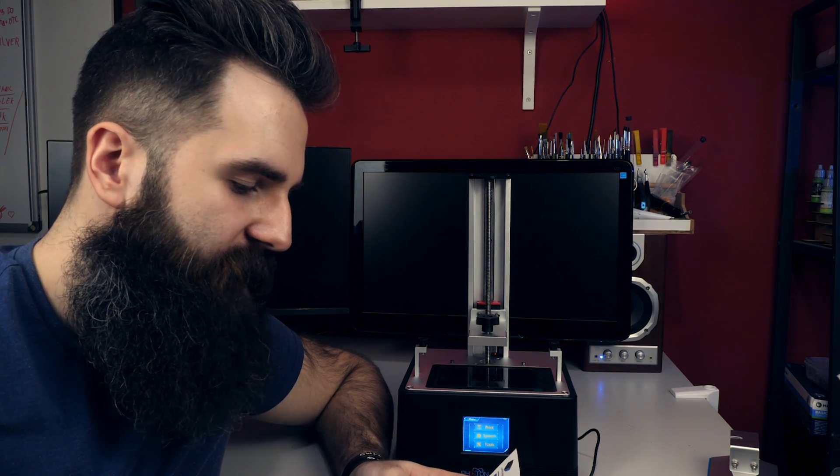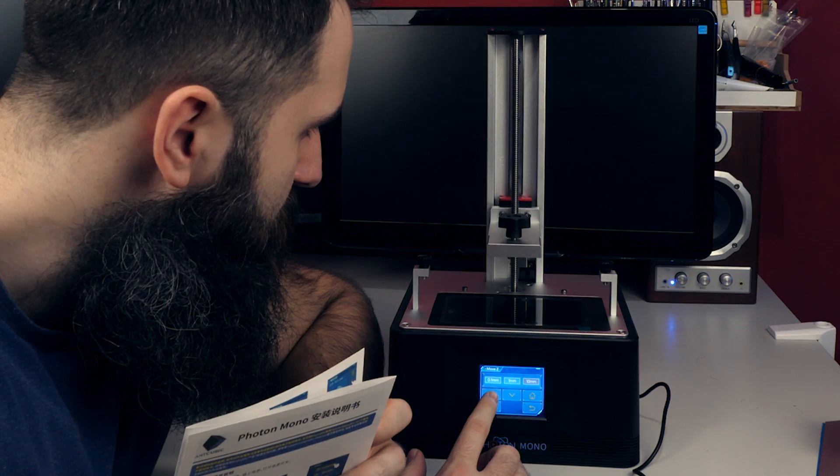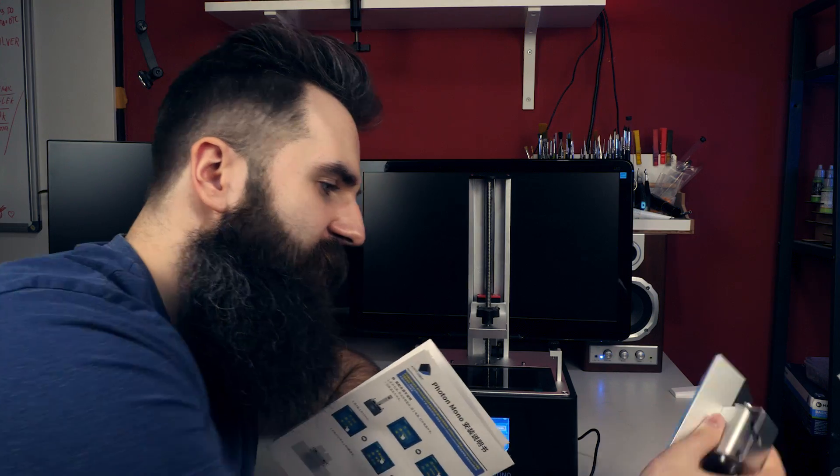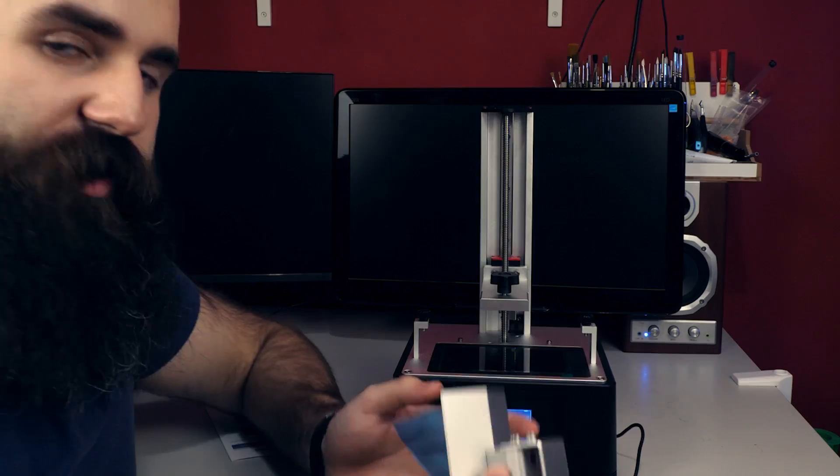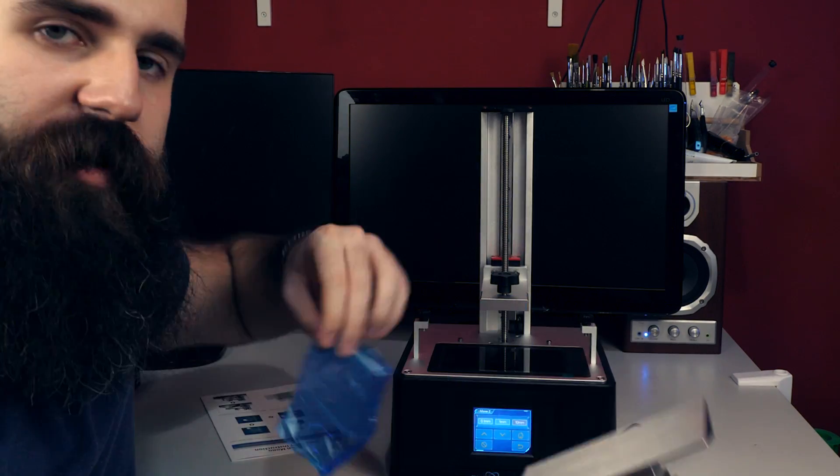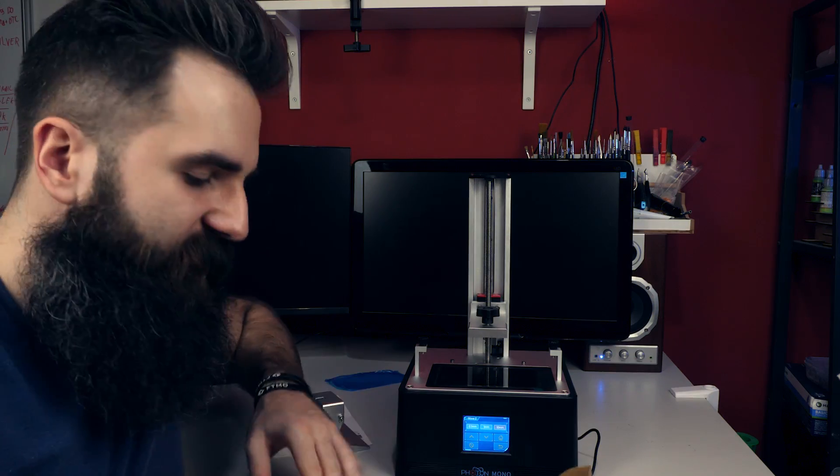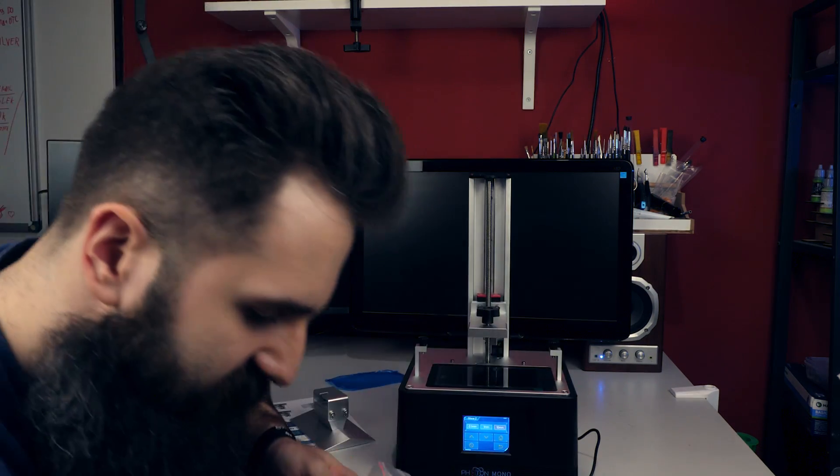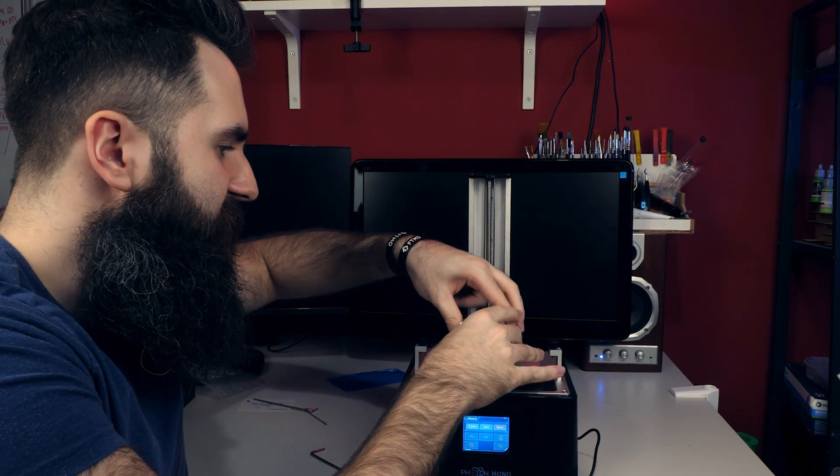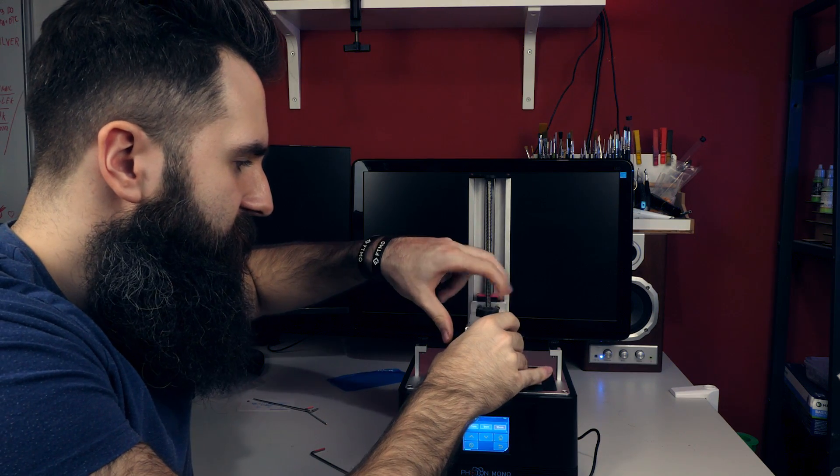Alright, so now we should raise the Z axis by 10mm. Take this little thing, we should loosen up all these screws. Just so you know, this is the actual printing platform. Now I didn't manage to do this by hand, so I probably have to use these little things. Okay, so apparently you just push it right here. And voila!